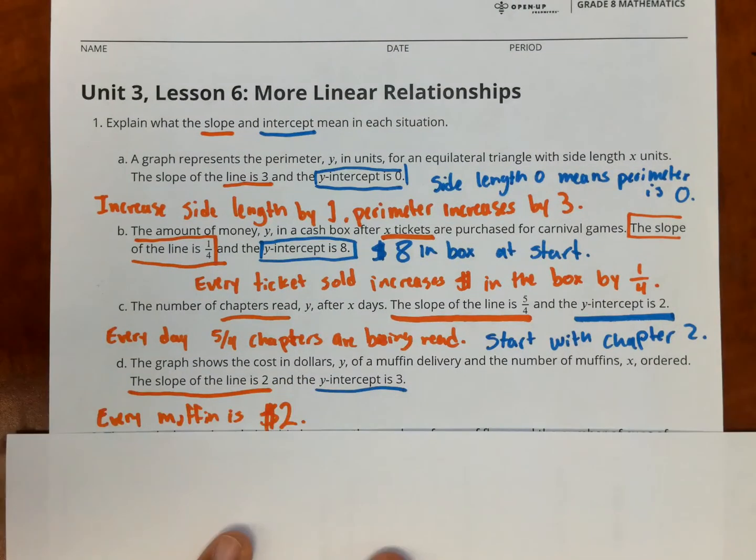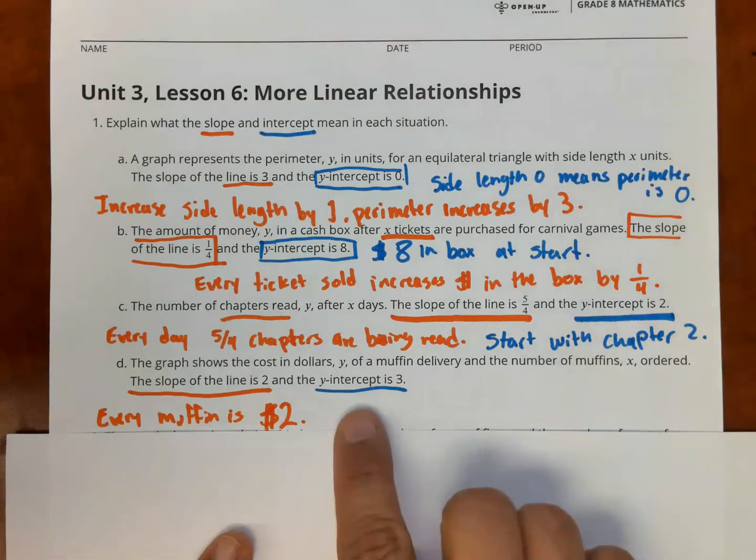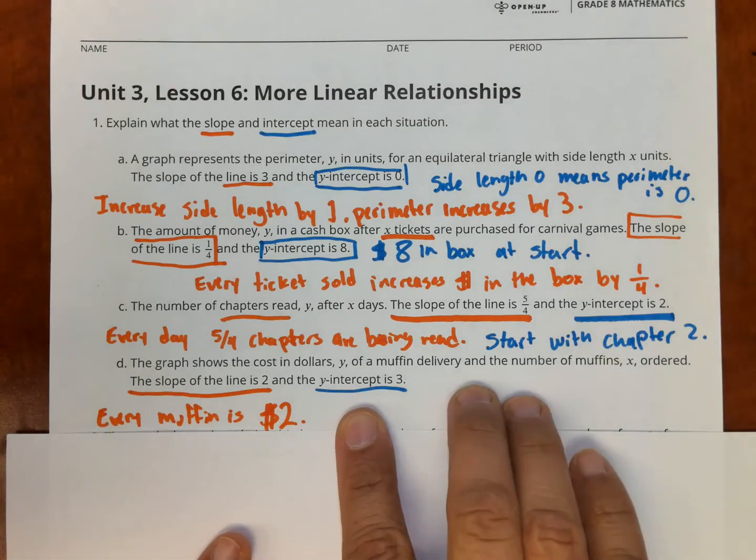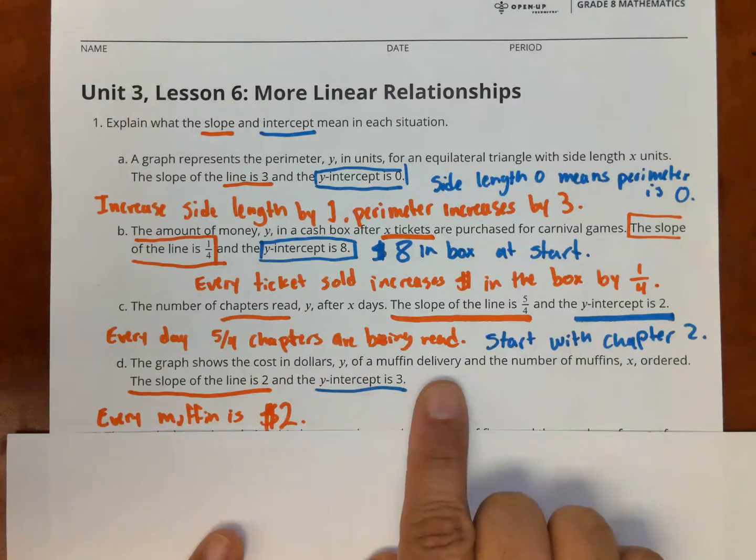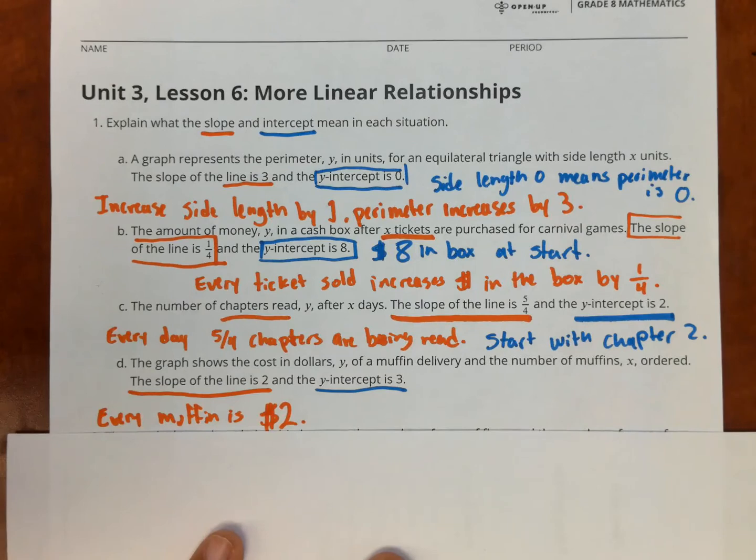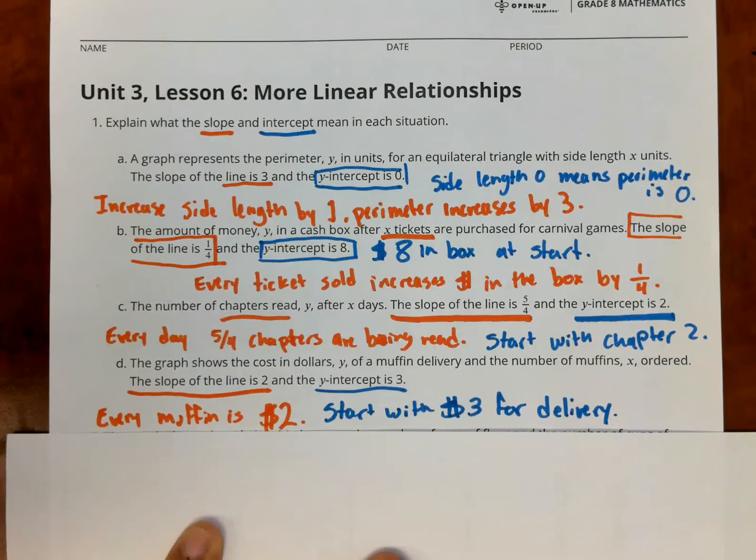For the y-intercept, the y-intercept is 3. So it's starting at 3. But what is starting at 3 here? A muffin delivery. Again, when you're doing a delivery, it doesn't matter how many muffins you buy, you're paying the delivery once. So he's starting with a $3 delivery fee or starting with $3 for delivery. Now here I want you to notice something very important.